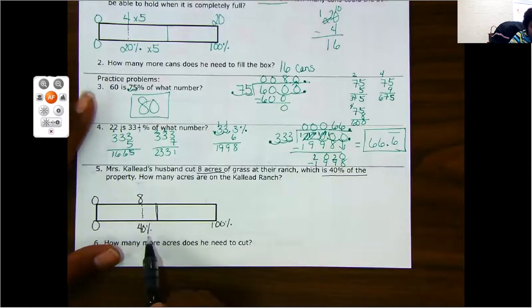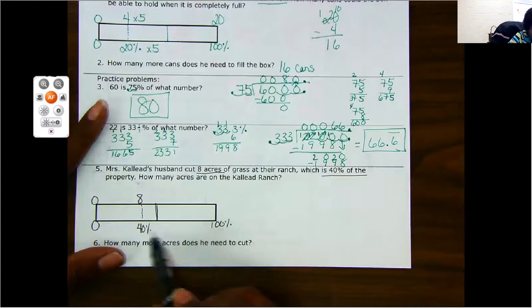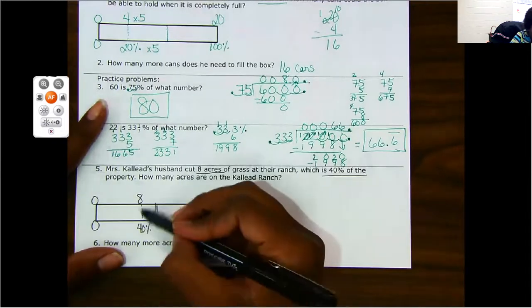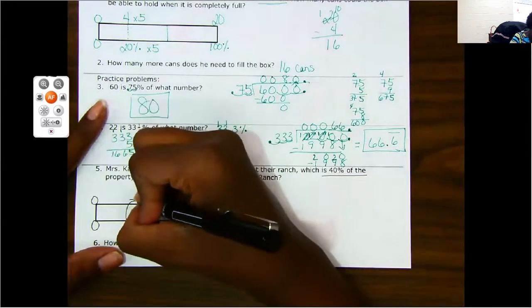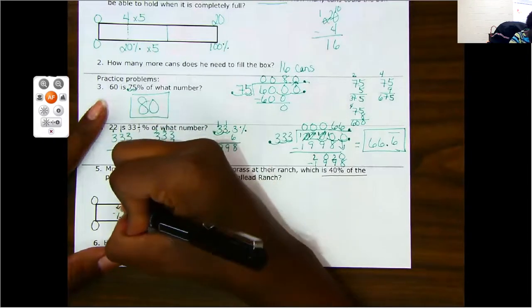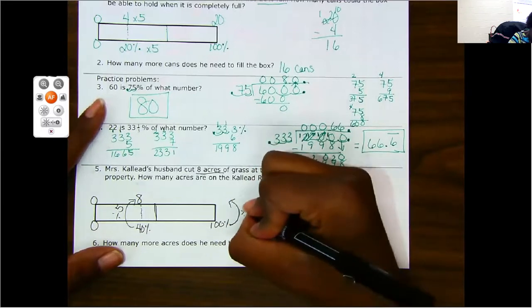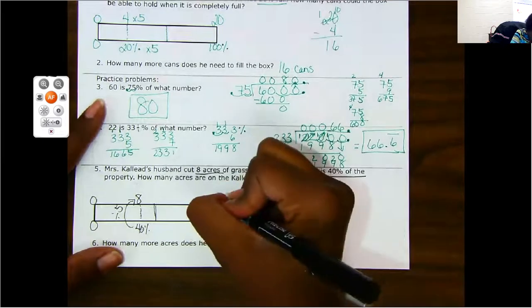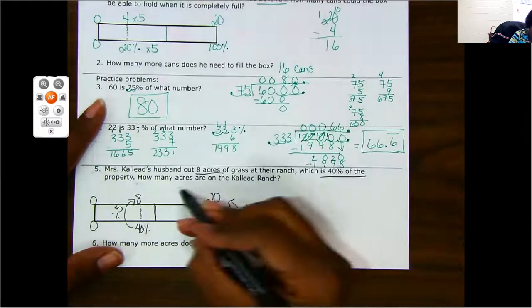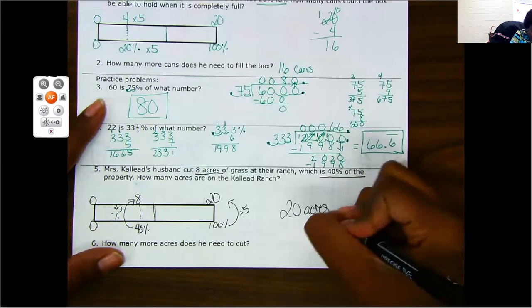They want to know how much the whole ranch is. Okay. Now let's see if we can find a proportion here from 40 to 100. I can't do anything to get from 40 to 100 or 100 to 40. So now I need to look this way. 8 and 40. I can divide by 5. 40 divided by 5 will give me 8. So let's do the same thing here. 100 divided by 5 will give me 20. So how many acres are on the ranch? 20 acres.